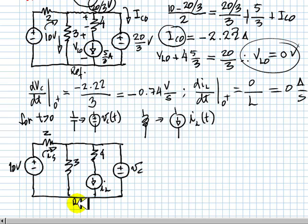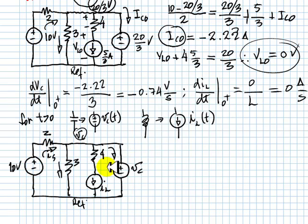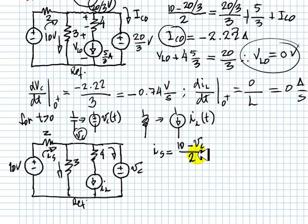This is the reference node. The node whose voltage is Vc. The current in the source is 10 minus Vc over 2. I don't need to go any further — the current in the source is 10 minus the voltage in the capacitor, divided by 2. So that current depends only on the voltage in the capacitor and not on the current in the inductor in this circuit.